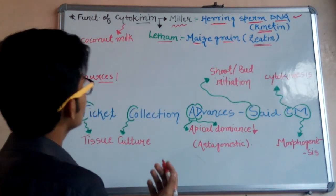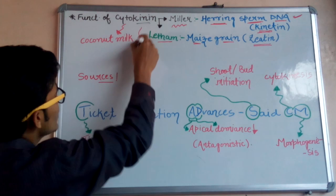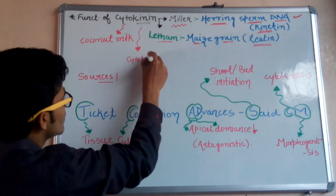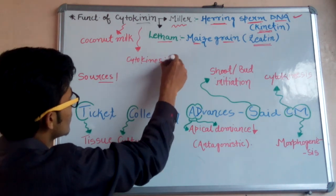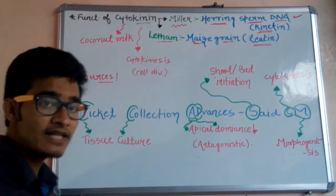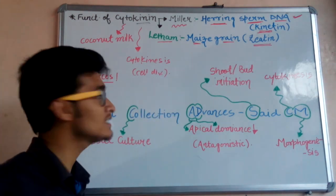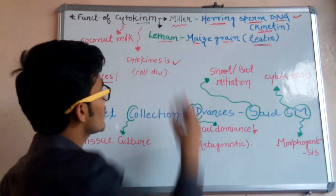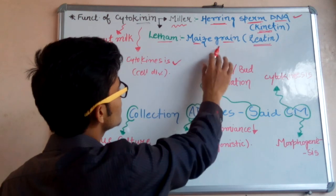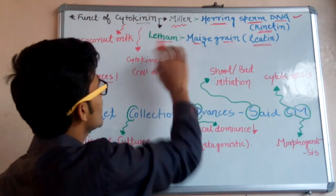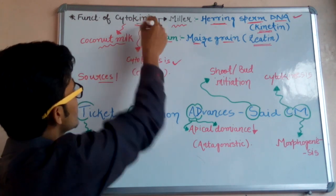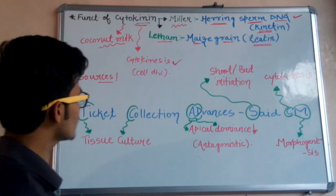Letham also discovered a cytokinin from maize grain, whose name is zeatin. Cytokinins, as the name indicates, are essential for cytokinesis — that simply means cell division. So the cells which are actively dividing — we can easily get cytokinins from those particular cells. These are extracted from herring sperm DNA as well as maize grain by different scientists, Miller and Letham respectively. Coconut milk is also a rich source of cytokinins.